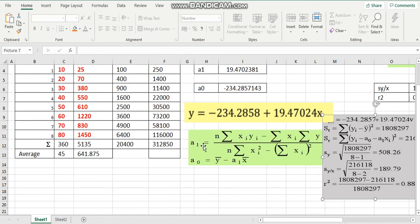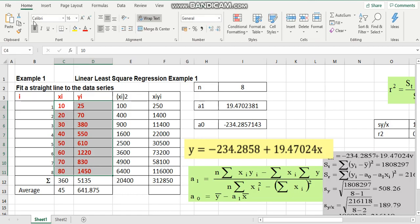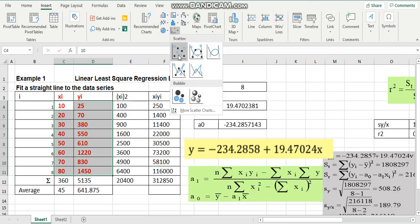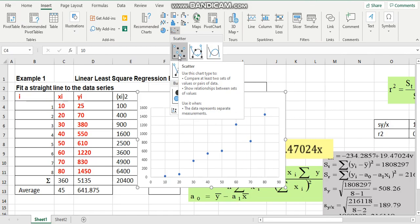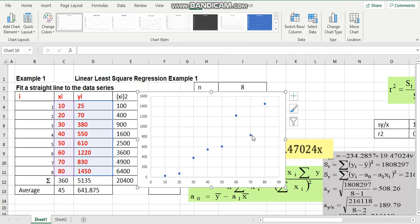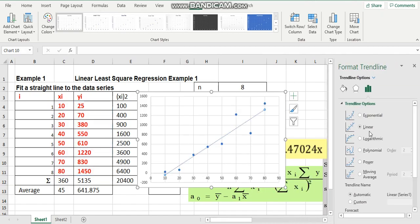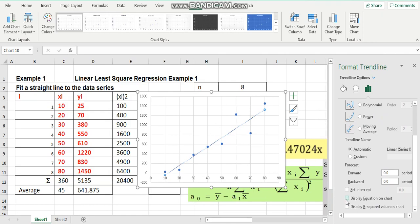Now, we try to plot a graph using the raw data. We insert the scattered plot. We right click at the data plot. We add the trendline. We choose linear and also to display. Click the display equation and r-square value on the chart.